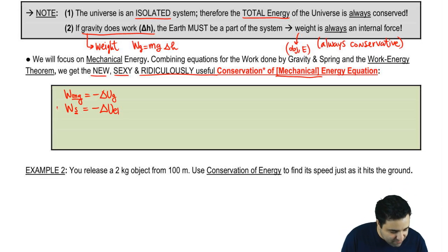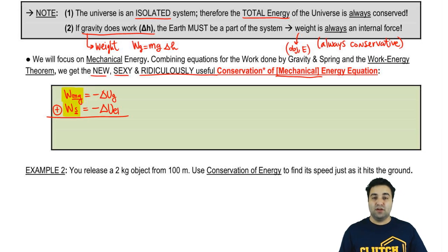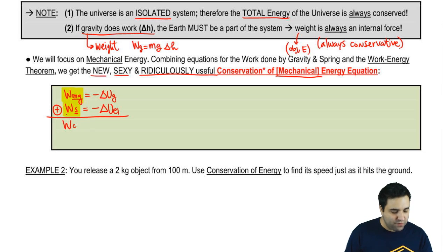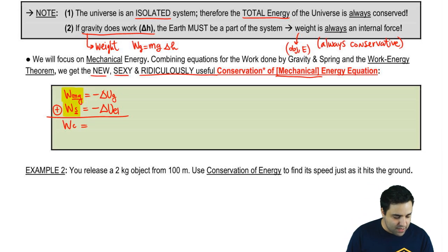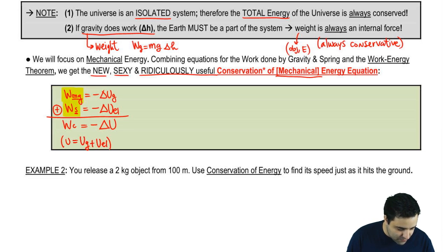So weight has to do with gravity, so it's the change in gravitational energy, and spring is the change in elastic energy — they're both negative. Gravity and the spring force are the only two types of conservative forces we discussed. So if we add these two, this is the work done by all conservative forces. These are the two types of mechanical potential energies, so combined, this is simply the negative of the change in total potential energy, because U means UG plus UEL.